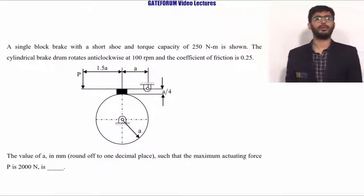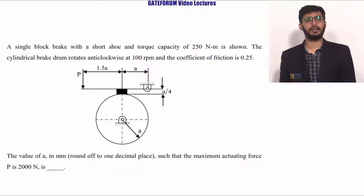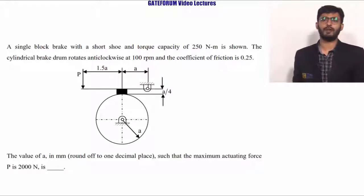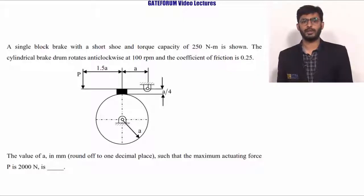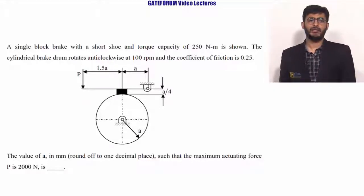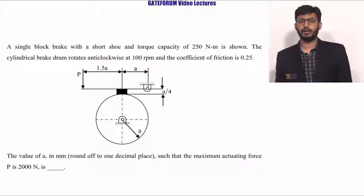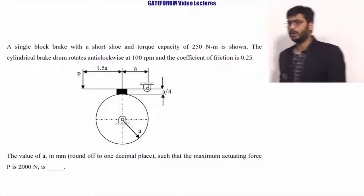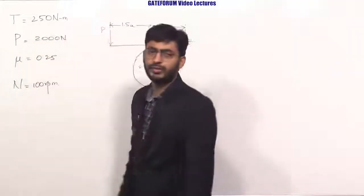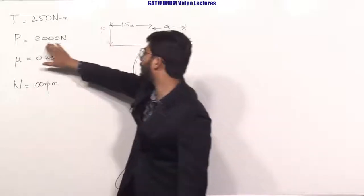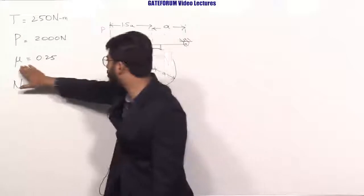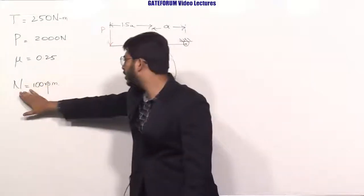This question belongs to the topic design of machine elements from the subtopic brakes. A single block brake with a short shoe has a torque capacity of 250 newton-meter. The brake drum rotates in anticlockwise direction at 100 rpm. The coefficient of friction is 0.25. The value of dimension A in mm such that the maximum actuating force P is 2000 newtons is to be found.